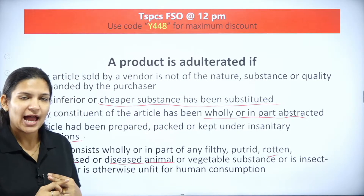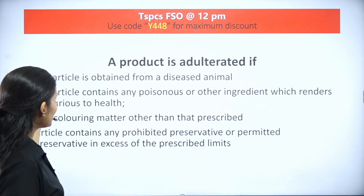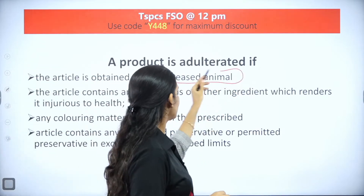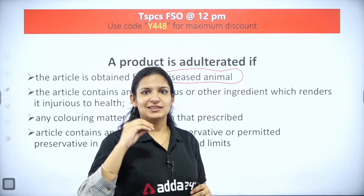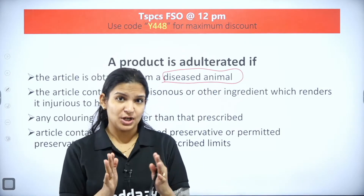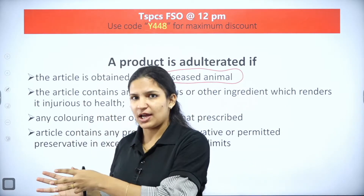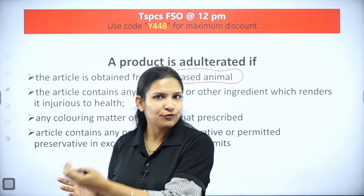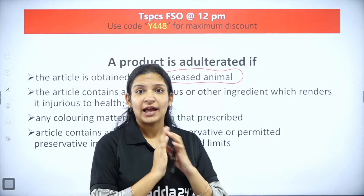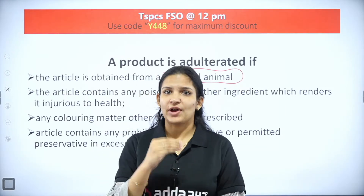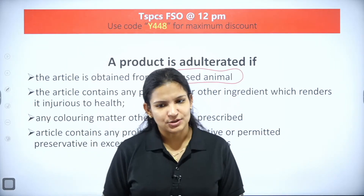Another condition is if the article is obtained from a diseased animal. For example, bird flu - if you are eating meat from a bird suffering from bird flu, or eating pork from a swine flu-affected pig, that comes into adulteration. Anything of animal origin where the animal was diseased counts as food adulteration.